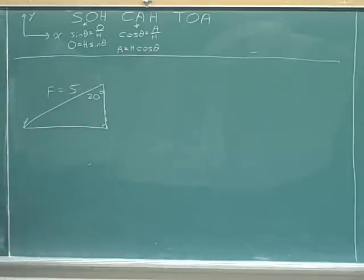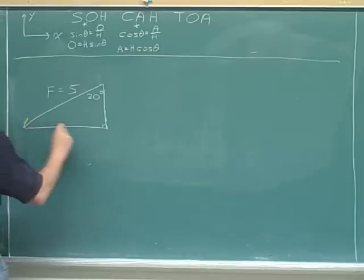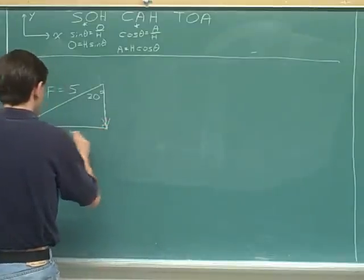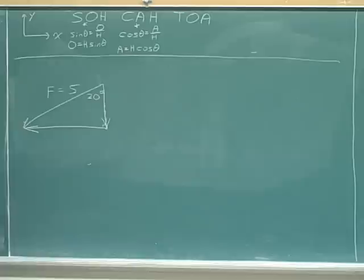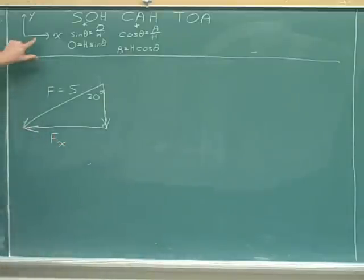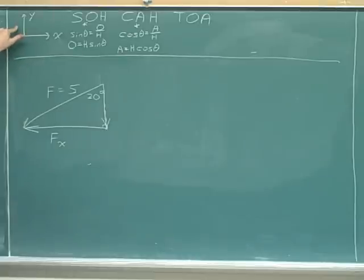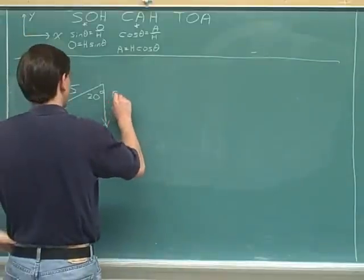Always put arrows on the components — that's a key step. The overall vector was pointing down and to the left, so the components are pointing down and to the left. Always label the components: this should be the x component because it's parallel to the x-axis. You have to use the axes that are given; stick with these axes until told otherwise.